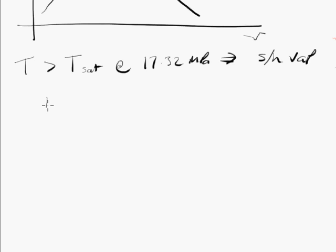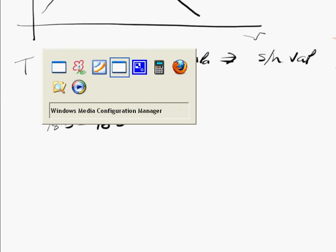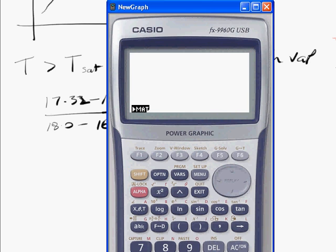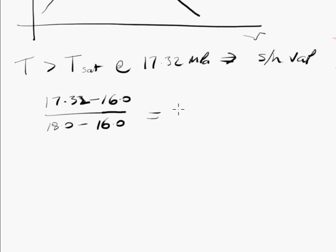So, let's compute our fraction in terms of pressure. Here, 17.32 over 18.0 minus 16.0 is 1.32 over 2. Well, I didn't need the calculator to do that really. So, that is 0.66. So, our pressure is 66% of the way between our two tabulated pressures.